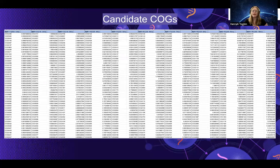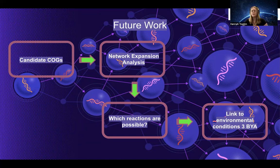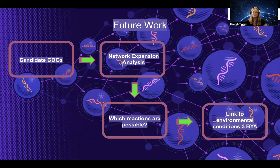We assembled a candidate list of COGs, which we are going to be using in the future to run through a network expansion analysis to better understand early metabolic functions and to determine which metabolic functions or reactions were even possible three and a half billion years ago. We're going to essentially combine what we believe are the environmental conditions of the planet three and a half billion years ago, along with these genes, to see how metabolism during the origin of life took place. Thank you so much for your time, and I'm looking forward to more work with Dr. McGlynn in the future.